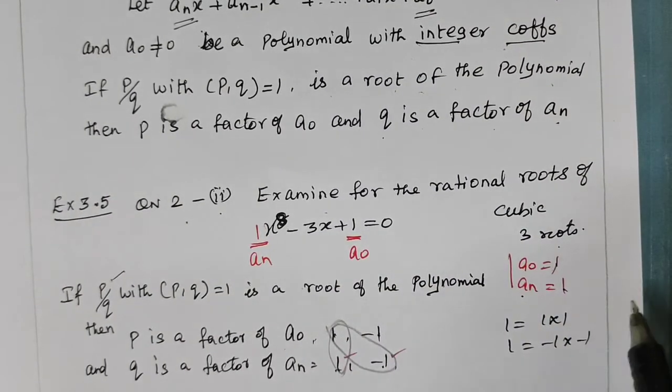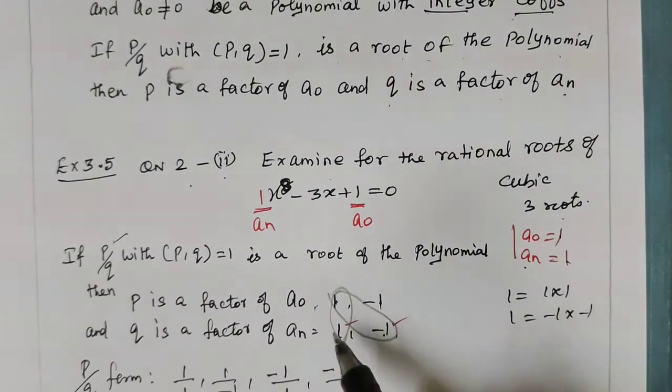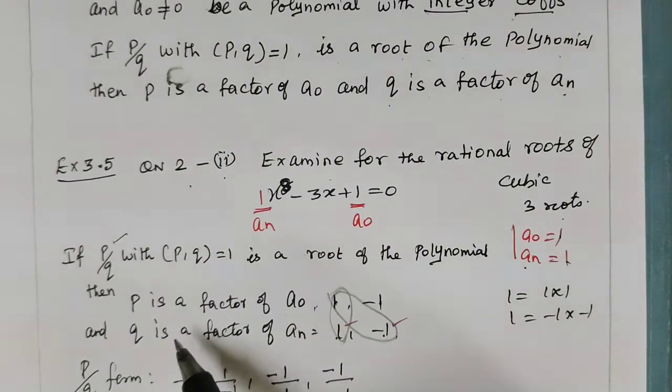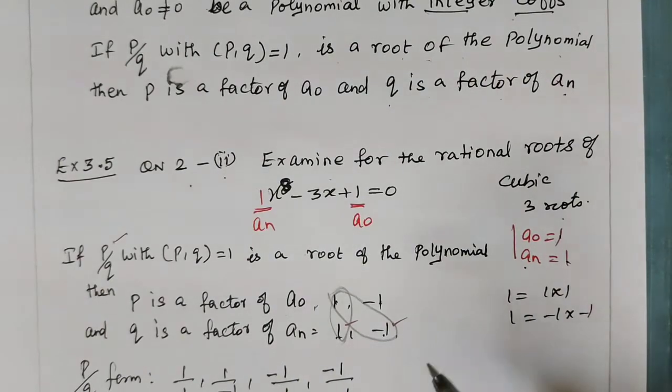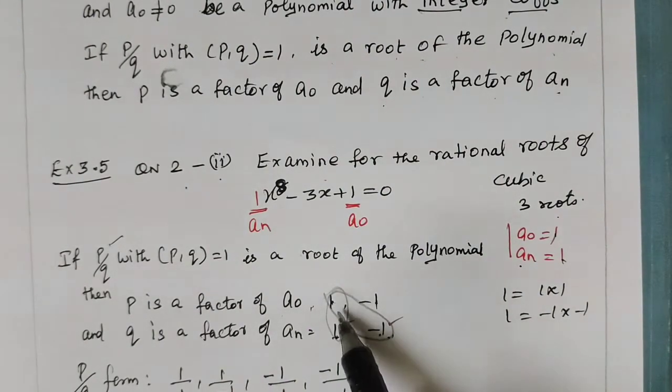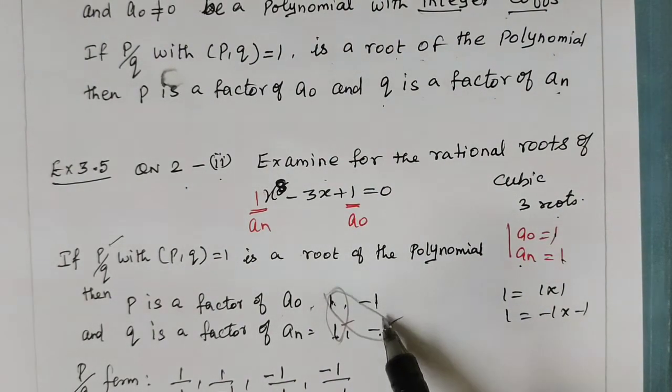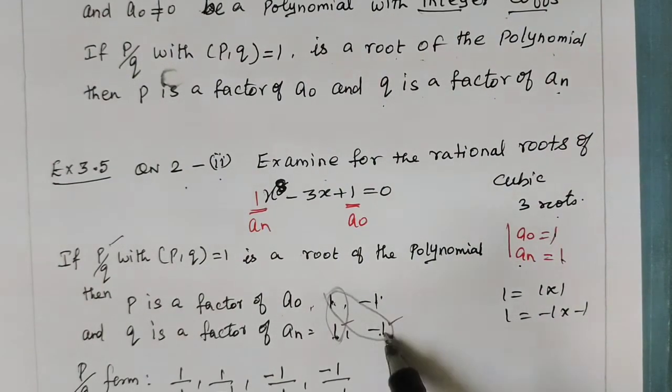So two chances are. So p is a factor of a₀ implies 1, -1. So q is a factor of a₁. a₁ equals 1, -1. So q is a factor of aₙ.